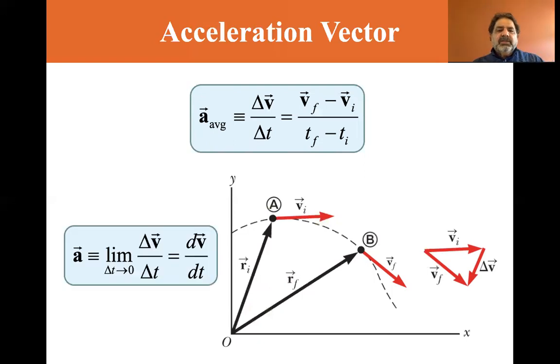And as delta T approaches zero, you don't want to get there because you'll have infinity. So the instantaneous acceleration is equal to the limit as delta T approaches zero of delta V over delta T. And that's simply dV dt.